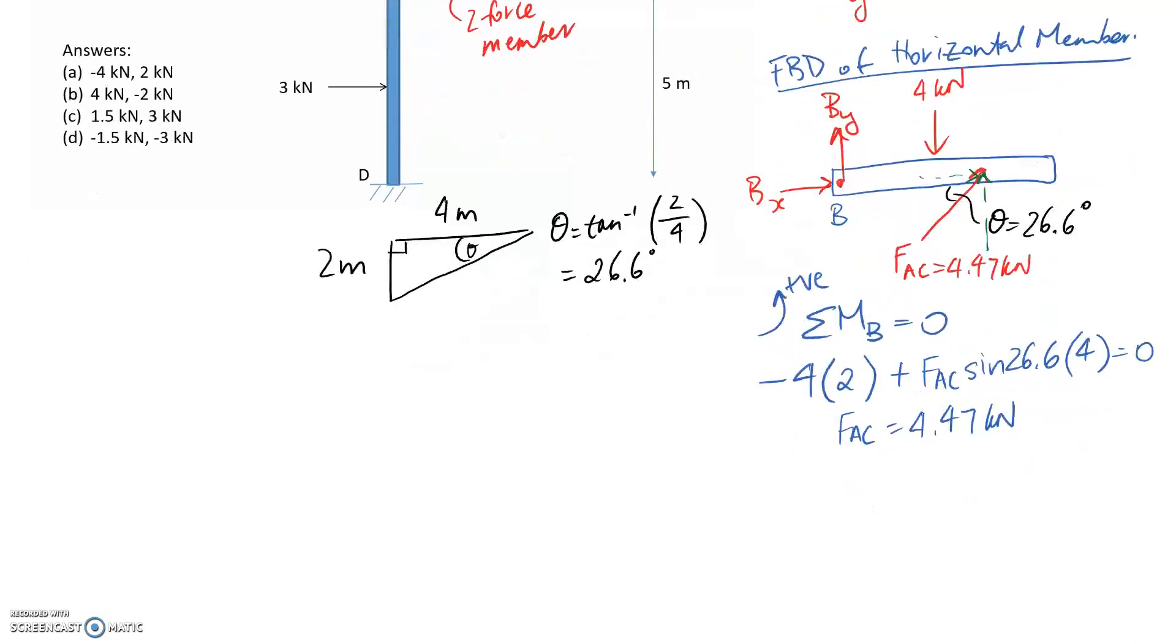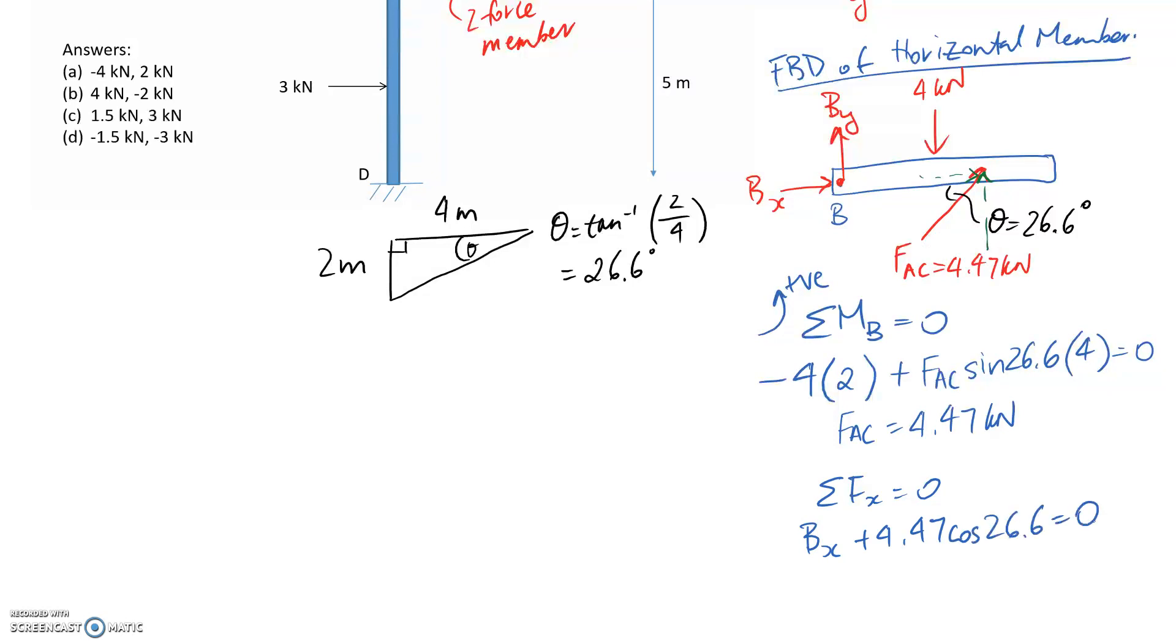Now we need to find Bx and By. Let's use sum of forces in the x direction. Bx I've drawn positive, so that's positive in the equation. Part of FAC is in the x direction, the cos side of the triangle. Bx comes out to be negative 4 kilonewtons. It's come out negative, which means the direction is incorrect. So it's actually 4 kilonewtons the opposite direction to what I had.